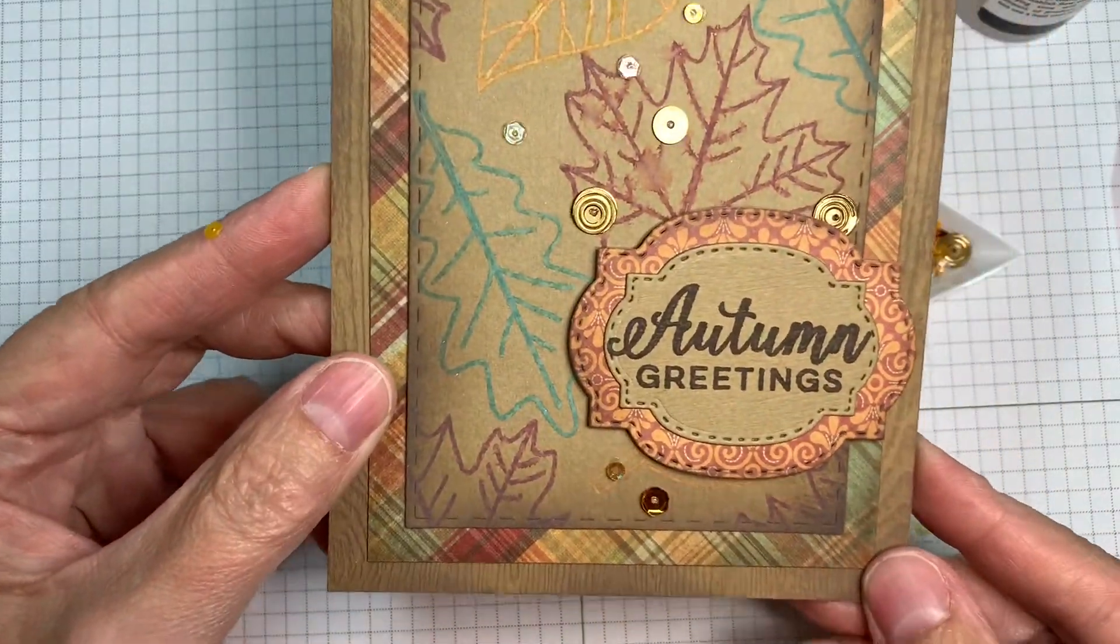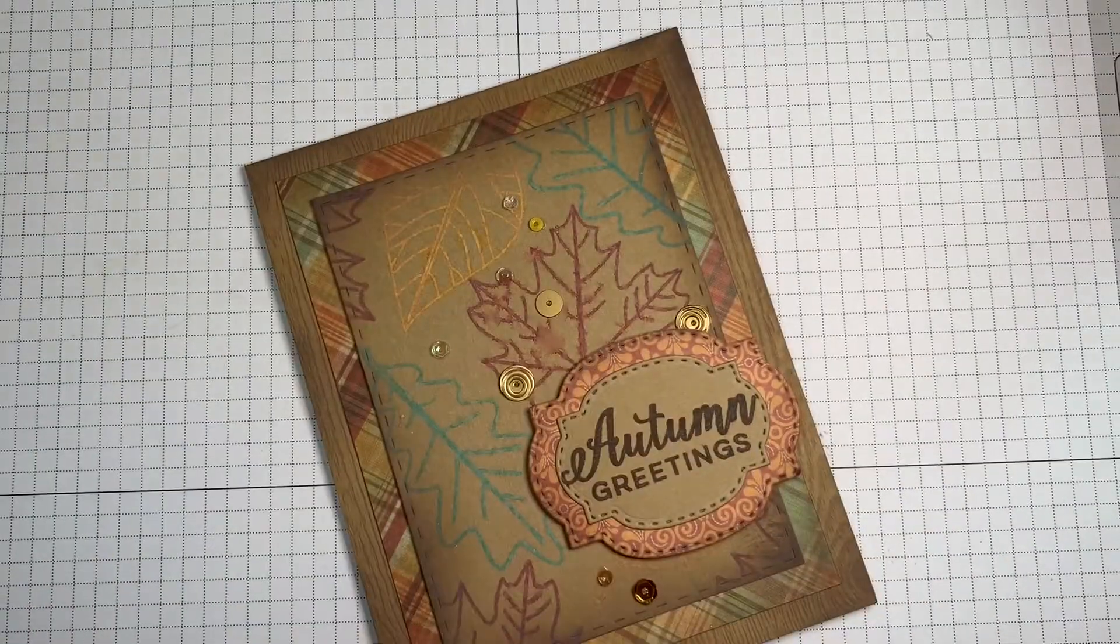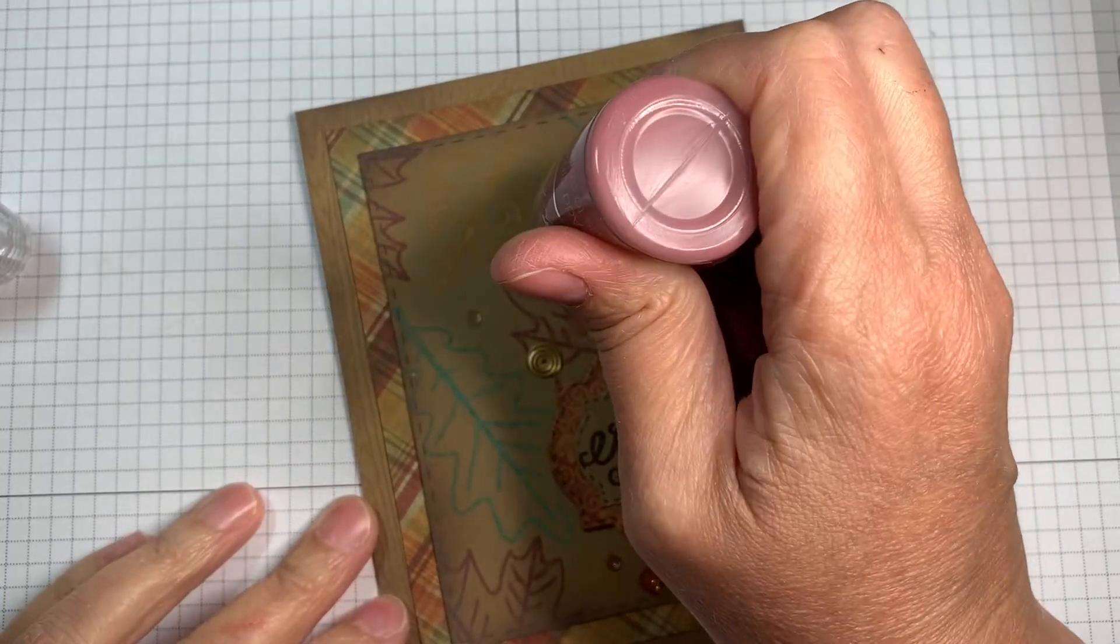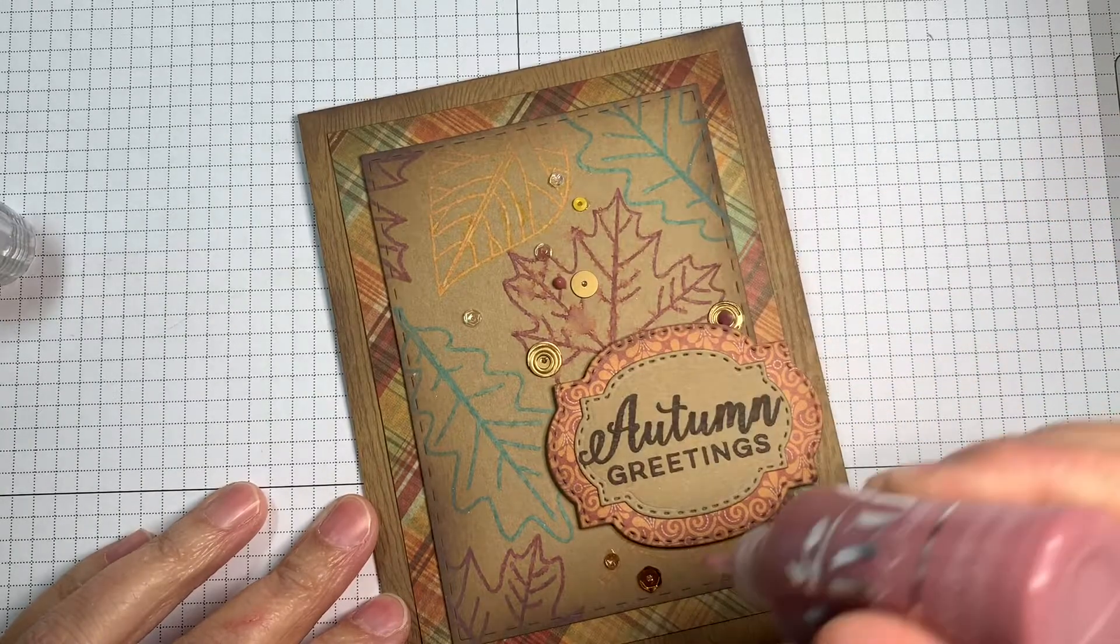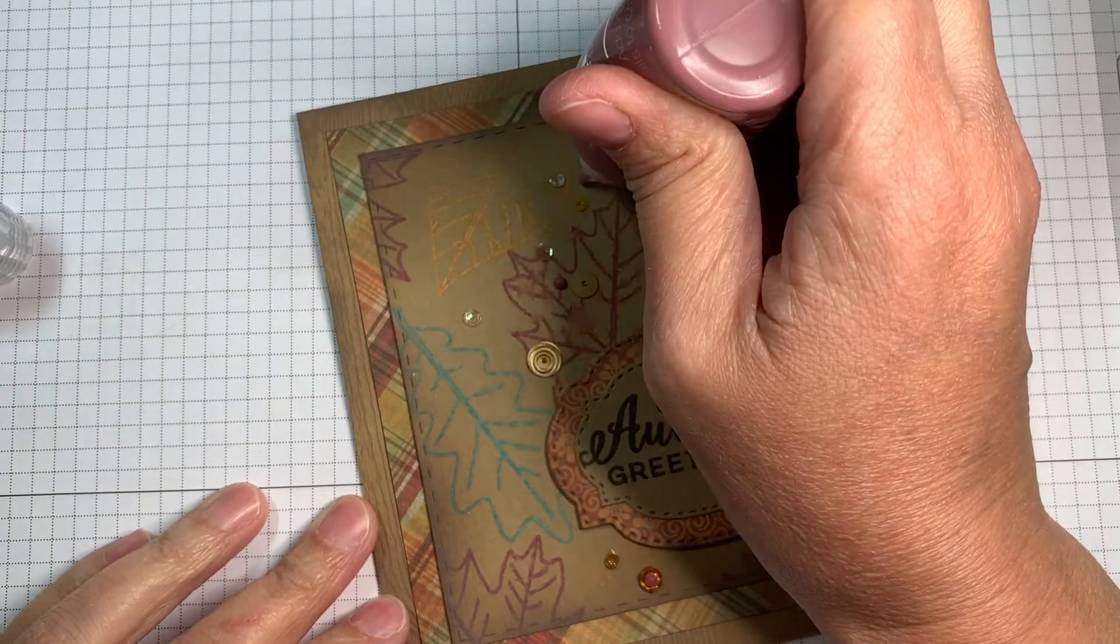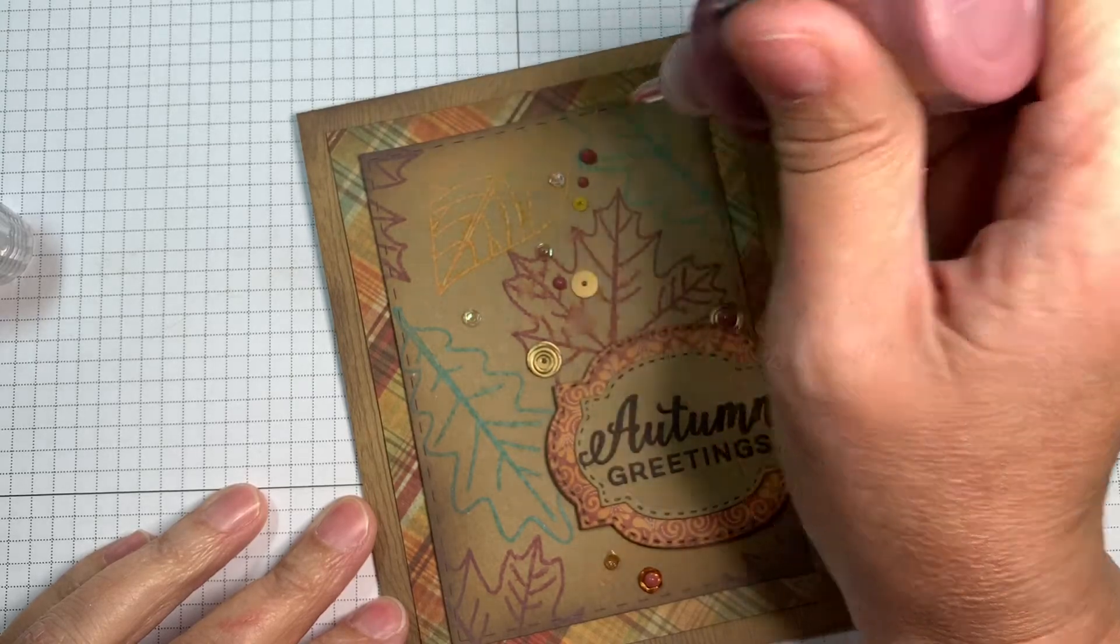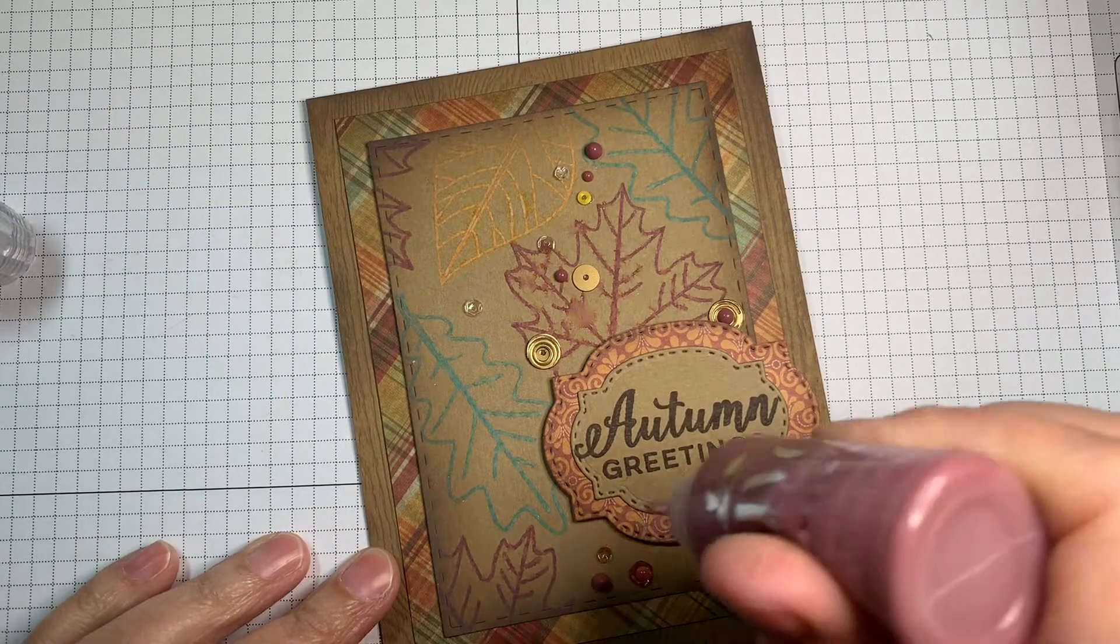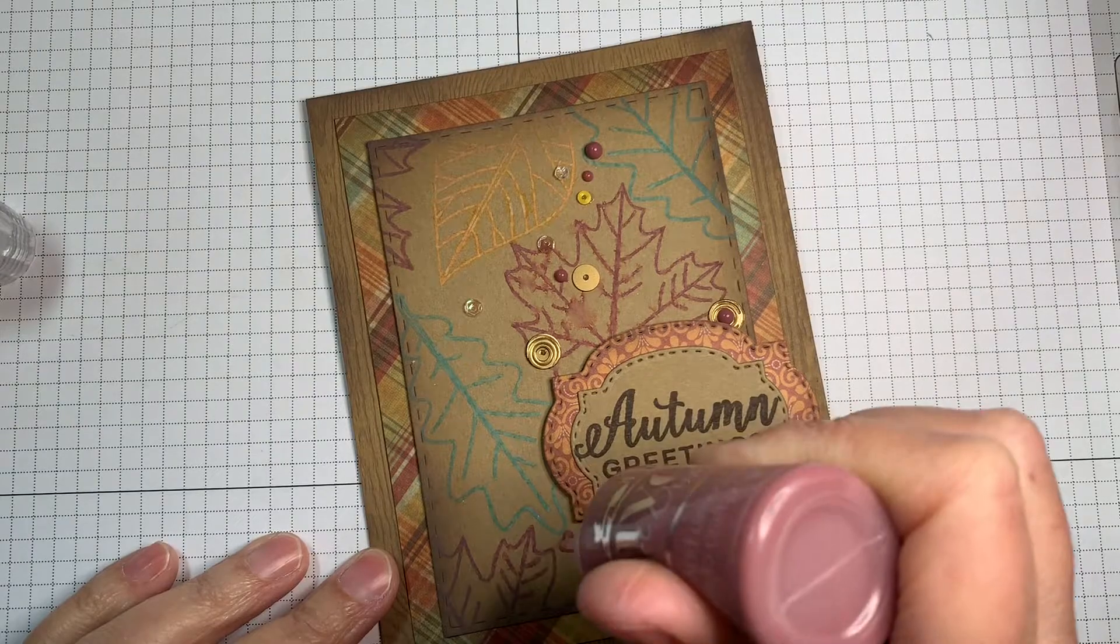Now we could leave it at this. But of course, I can't leave anything alone. I'm going to be adding my favorite, which are Nouveau Crystal Drops. This is the Moroccan Red. It's kind of more of a burgundy-ish color. But it matches the aged mahogany distress oxide ink perfectly. I'm just adding a few little dots, some in the center of sequins, some on the paper themselves. Just to give it a little bit of interest, something fun. This was a really simple card. So adding a few little details will kind of make it stand out, pop a little bit.